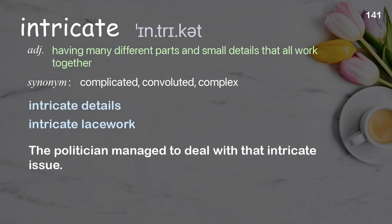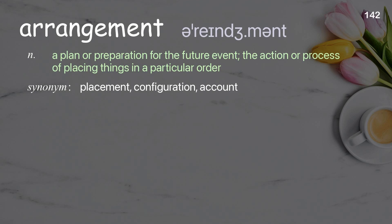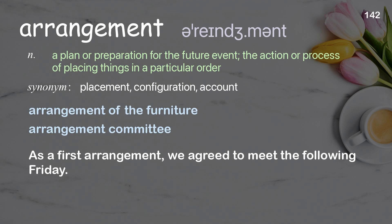Arrangement: a plan or preparation for a future event; the action or process of placing things in a particular order. Examples: arrangement of the furniture, arrangement committee. As a first arrangement, we agreed to meet the following Friday.